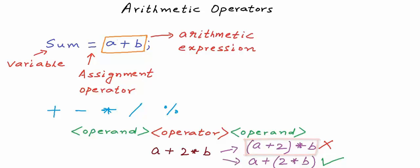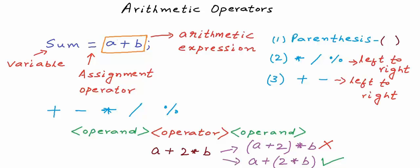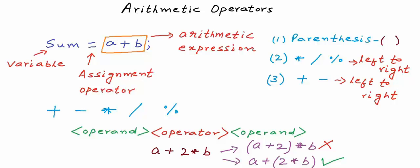In a complex expression, operator precedence decides the order of operations. In an arithmetic expression, first preference is given to parentheses, next in priority are multiplication, division, and modulo, and then come addition and subtraction. If there are two operators of the same priority, they are executed from left to right. So the expression a + 2 * b implicitly means a + (2 * b). If we want addition to be performed first, we must put parentheses explicitly and write it as (a + 2) * b.